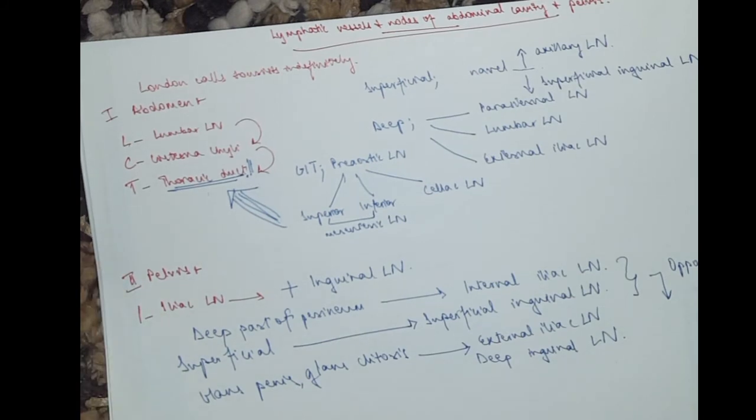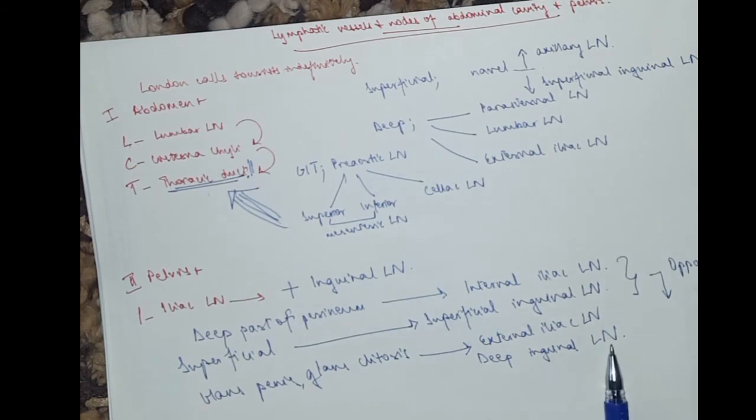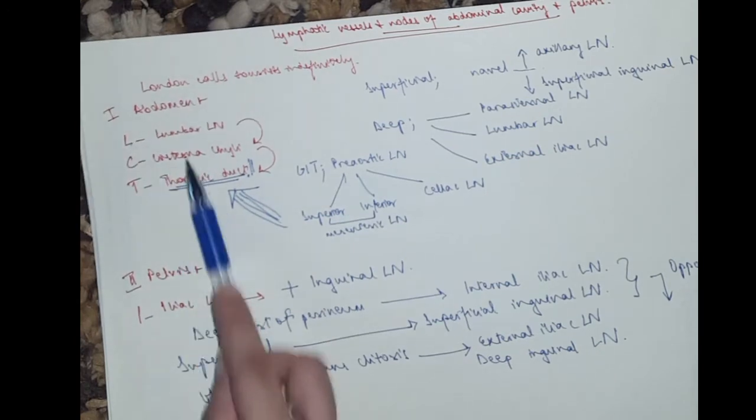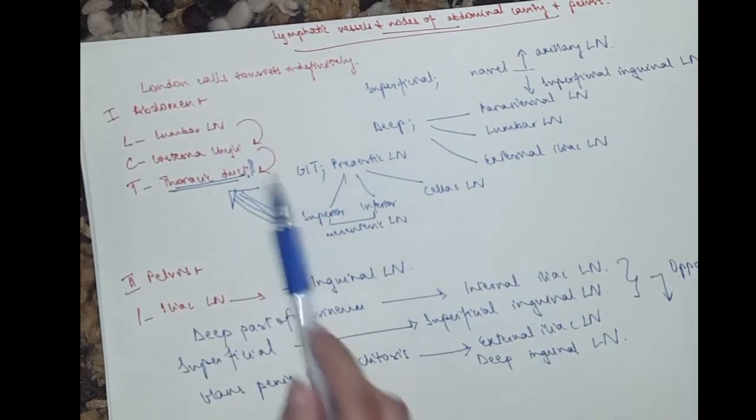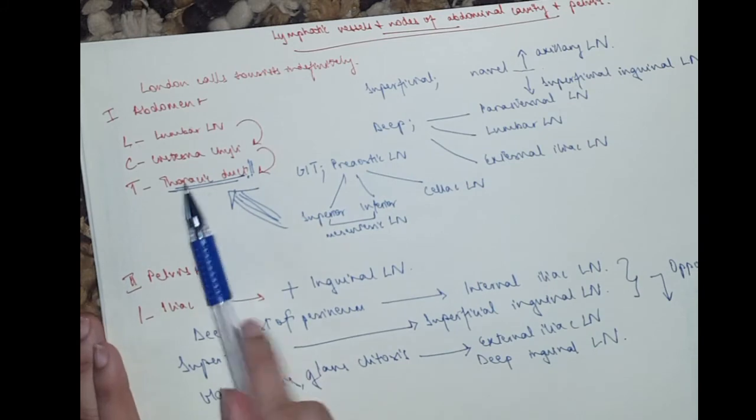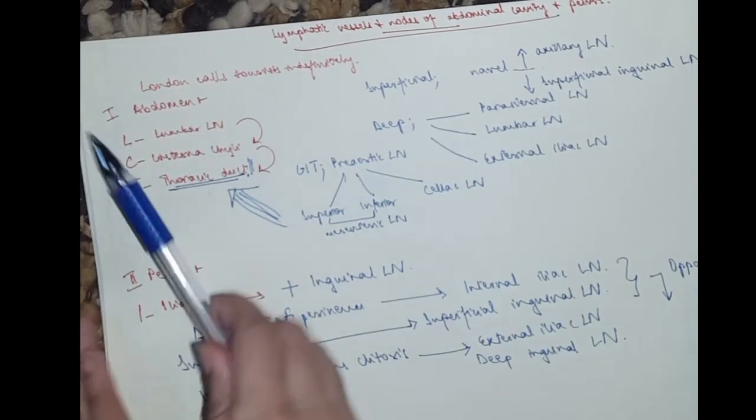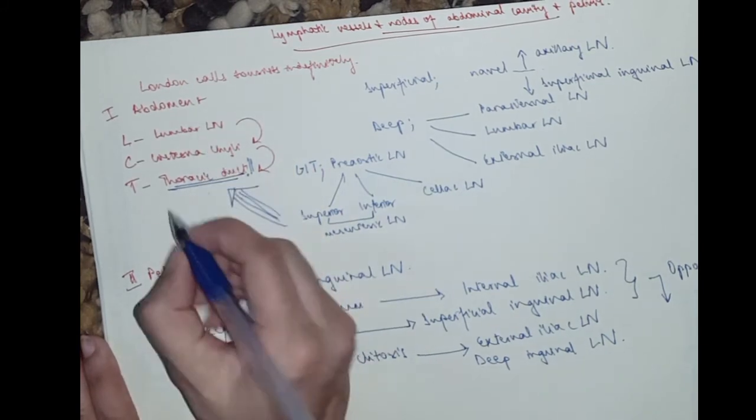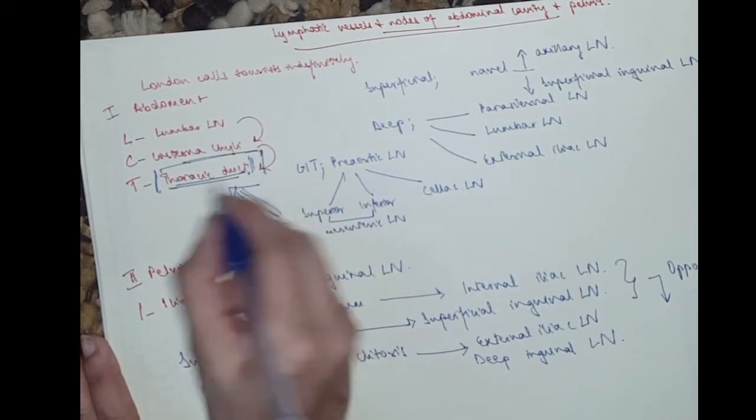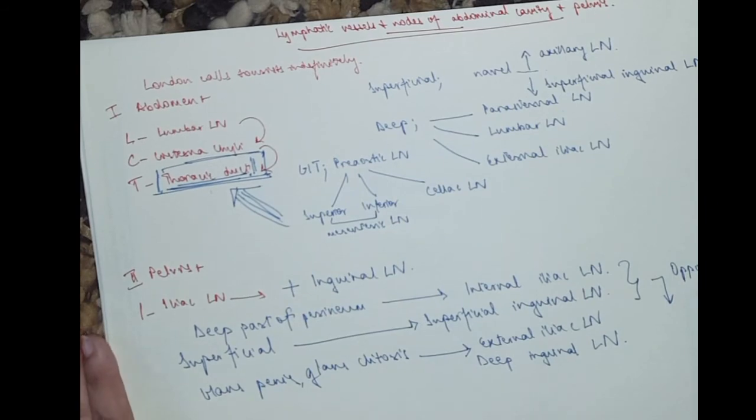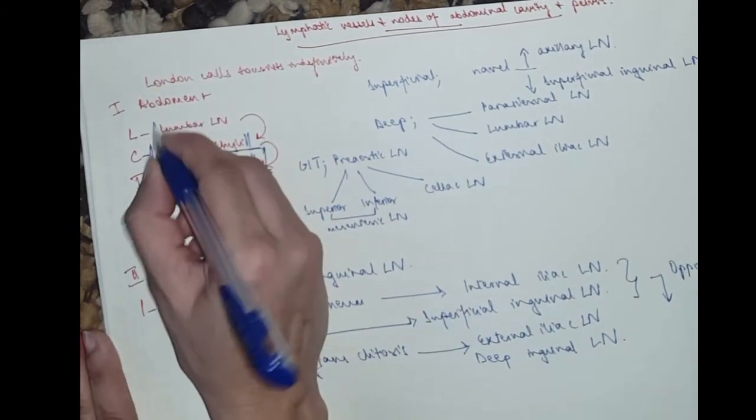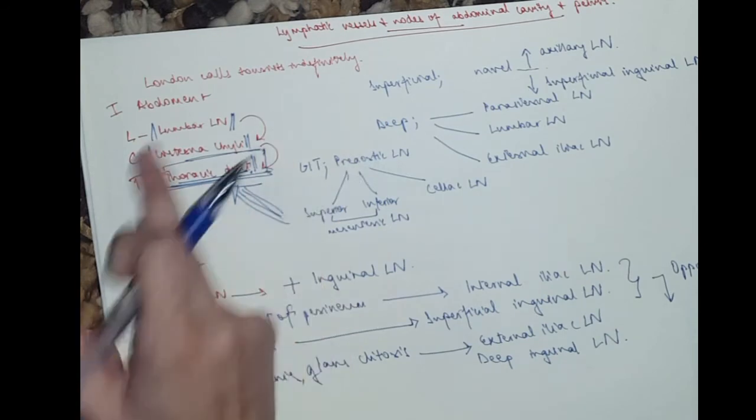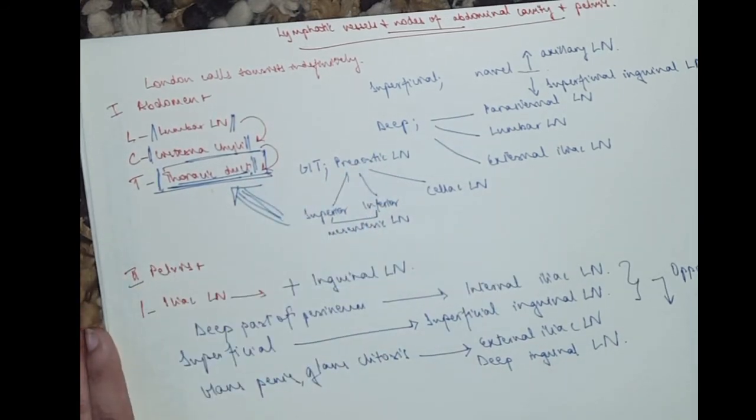And that is it. Obviously, from the external, it's deep. It goes to the lumbar. The deep one goes to lumbar. All of these pelvis ones goes to lumbar. Lumbar will go to the cisterna. Cisterna will go to thoracic duct. So, the entire lower body is drained here. And the left side of the upper body is also drained in the thoracic duct. So, this is the big guy here, which is important. And so is cisterna, chile and lumbar. Because through these two, everything ends in the thoracic duct.